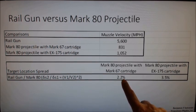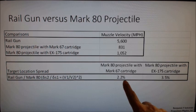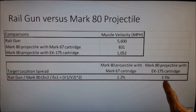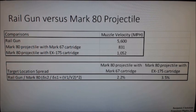We see that the location dispersion of the target is 2.2% that of when using the Mark 67 cartridge. In other words, the location dispersion of the target is 45 times less than a conventional gun projectile. And using the EX-175 cartridge, it's 3.5% or 28 times smaller than the location dispersion using the EX-175 cartridge. Wow, that is a substantial decrease in the location dispersion. Just by substantially increasing the muzzle velocity, we have between 30 and 45 times improvement in the accuracy of the projectile.